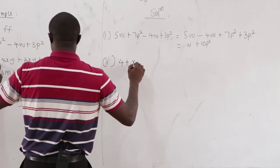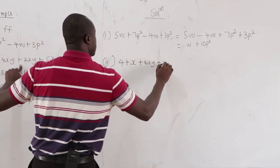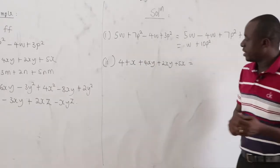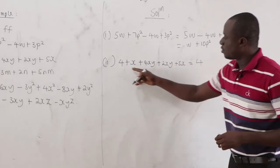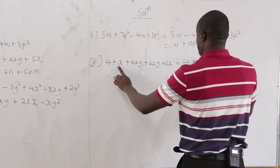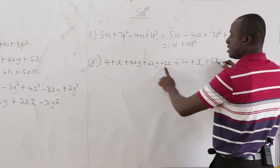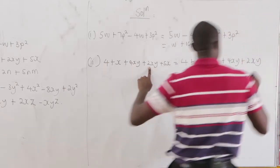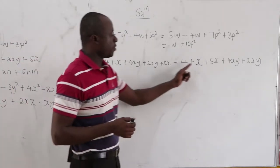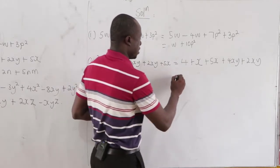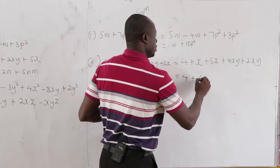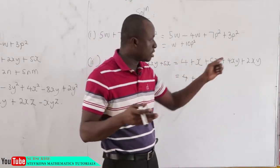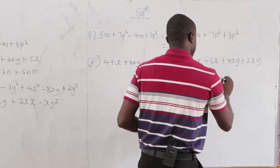Part ii: 4 plus x plus 4xy plus 2xy plus 5x. Group like terms: 4 is a constant with nothing to add. Then x plus 5x equals 6x. And 4xy plus 2xy equals 6xy. So the answer is 4 plus 6x plus 6xy.